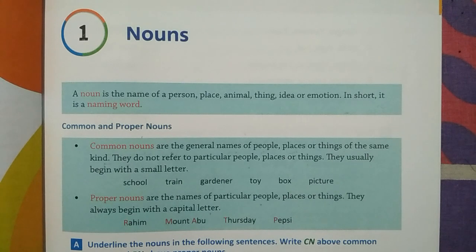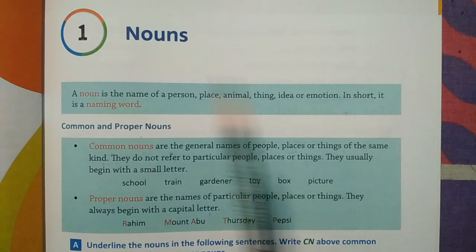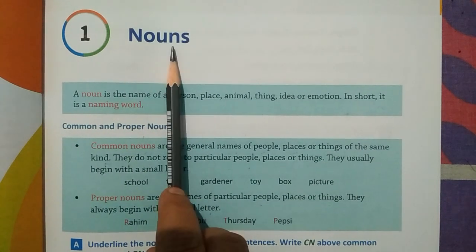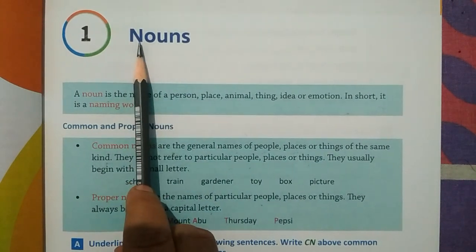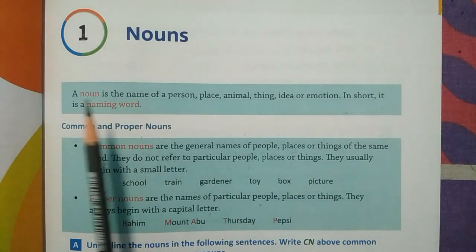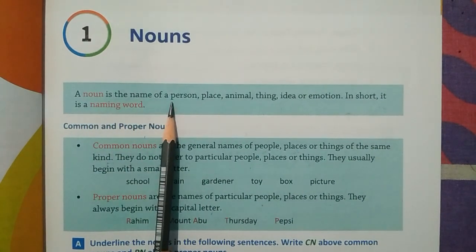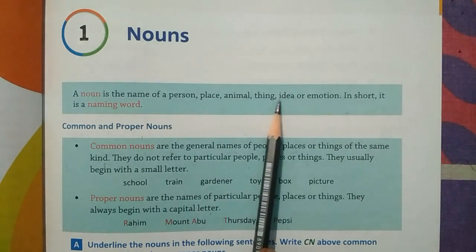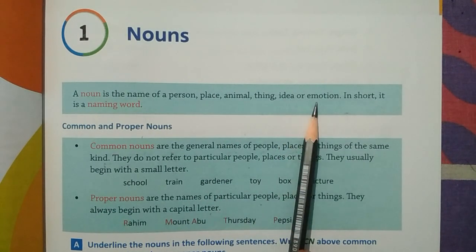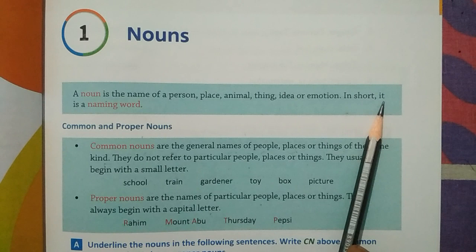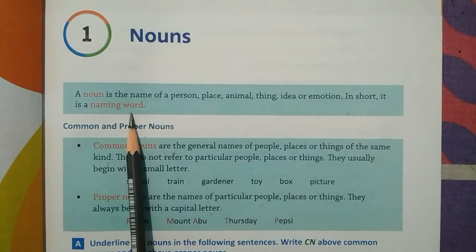The first chapter is Noun. You might have read this chapter in class 4th also. Noun means names of anything. A noun is a name of person, place, animal, things, idea or emotion. In short, it is a naming word.